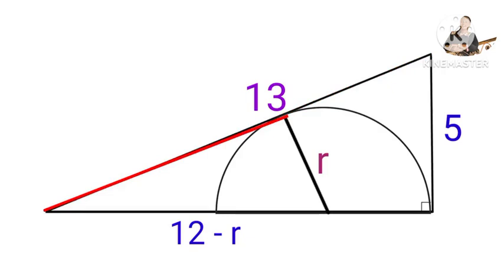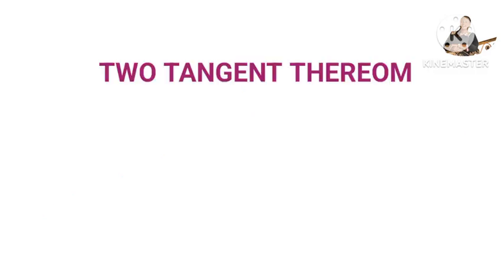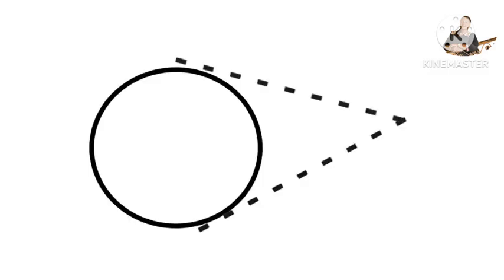For that, let me tell you about a theorem called two-tangent theorem. If two tangents are drawn to a circle from a single external point, then the tangents will always be equal in length.